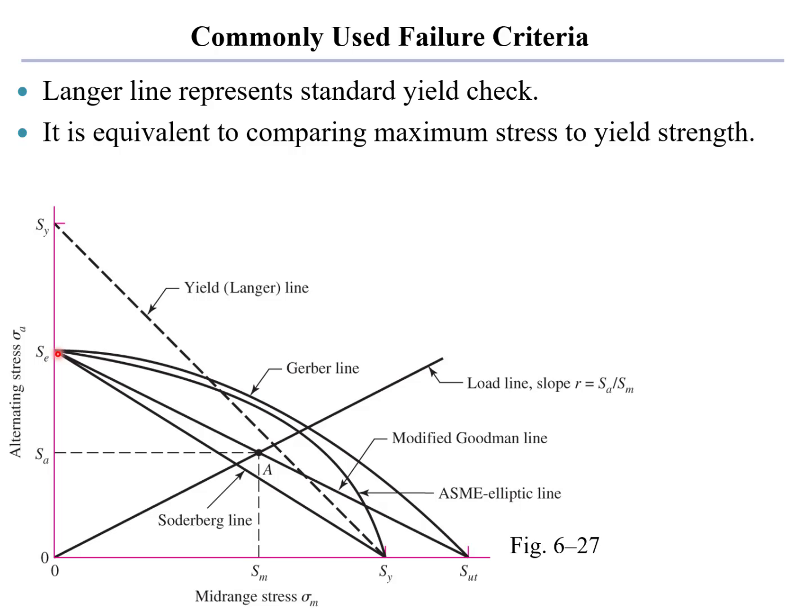The modified Goodman line, which goes from the endurance strength down to the ultimate strength, the ASME elliptic, which connects the endurance to the yield strength using an elliptical function, and the Gerber line, which connects the endurance to the ultimate using a parabolic sort of function. This represents a load line, and we talked about all of this stuff before.